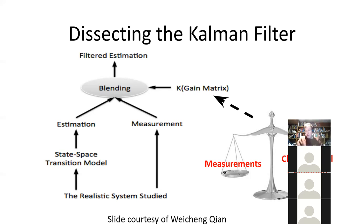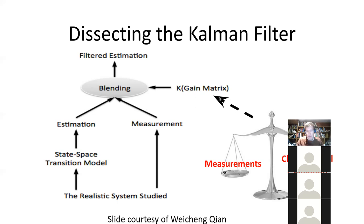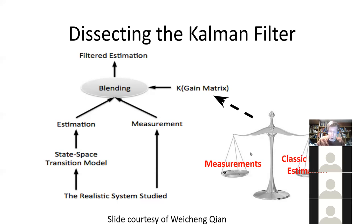The overall feel is that it balances the model's projections — what the model expects to be happening now — against what are called measurements. I prefer to use the term empirical observations. Kalman filtering is often applied in aircraft avionics or spacecraft, where it's a measurement from a sensor, but it could equally be an empirical observation of new illness cases. We have a states-based model projecting forward, and we blend it with measurements through a gain matrix K.